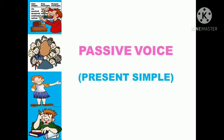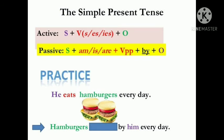Starting with converting active voice into passive voice — let's start with the first tense, that is simple present tense. The simple present tense active voice formula is: Subject + Verb (s/es/ies) + Object. When we convert it into passive voice, the formula becomes: Object + is/am/are + Verb (third form/past participle) + by + Subject.